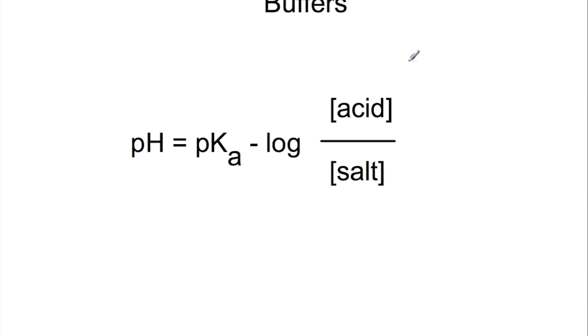To change the pH of the buffer to the desired pH for your experiment you would change the composition of concentration of acid and concentration of salt.